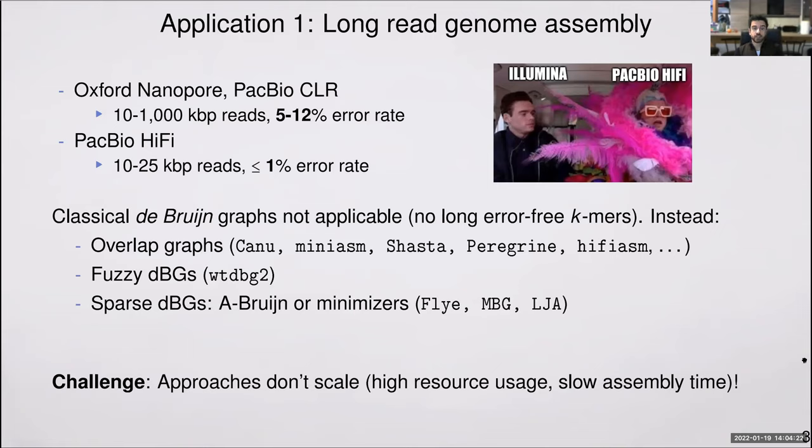Instead, assemblers have been working around this problem by going back to the overlap graph paradigm with quite a bit of success, using fuzzy or sparse De Bruijn graphs. A very recent development is LJA, which was mentioned by Lina in our previous talk. For all of these efforts, there's still a challenge that they don't scale so well. Memory usage is high and sometimes relatively slow.